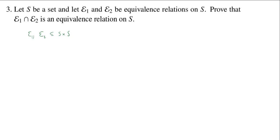So of course, if I intersect two subsets, it's again a subset. The question is, will it still satisfy the three equivalence relation axioms, namely reflexivity, symmetry, and transitivity? We're going to check them one at a time.